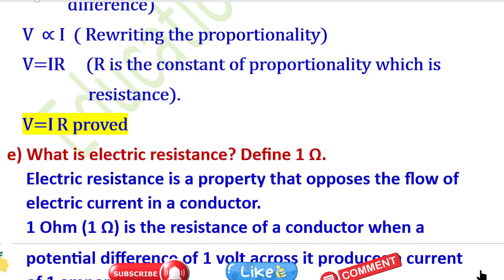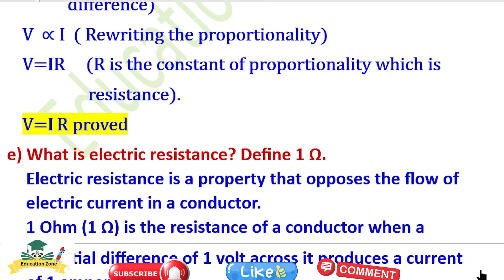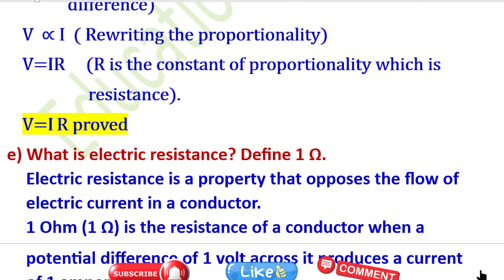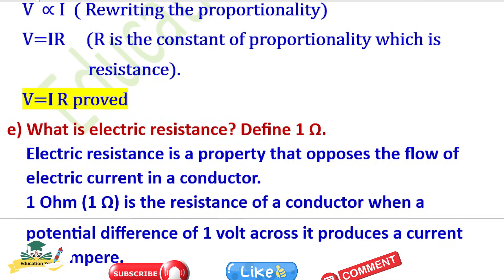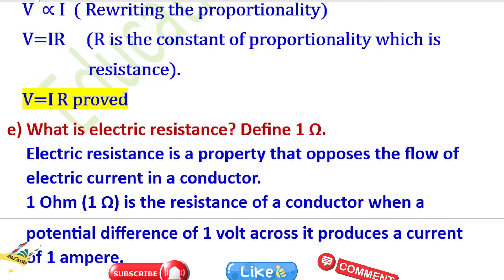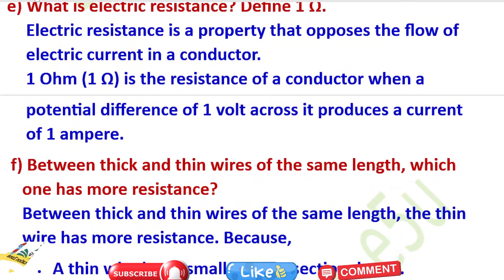Question E: What is electric resistance? Define one ohm. Electric resistance is the property that opposes the flow of electric current in a conductor. One ohm is the resistance of a conductor when a potential difference of one volt across it produces a current of one ampere.